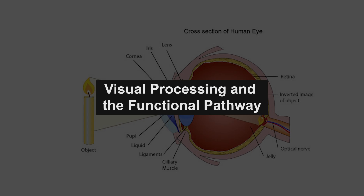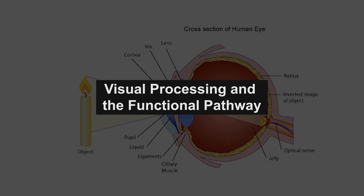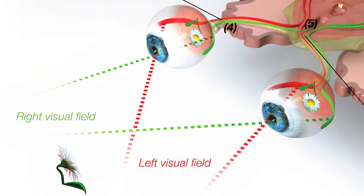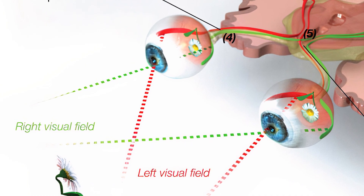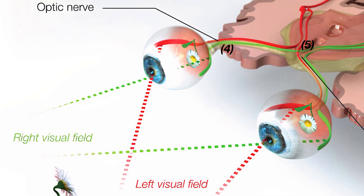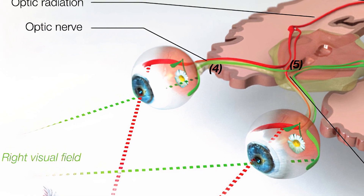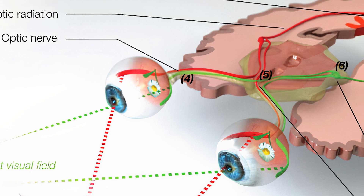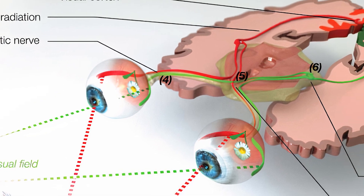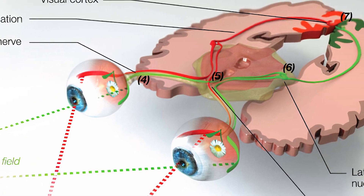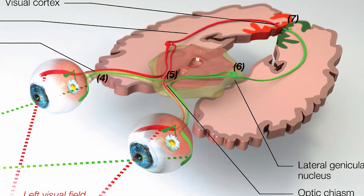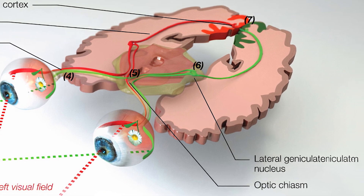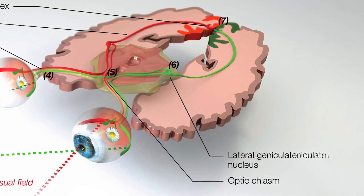Once light is focused onto the retina, the photoreceptors initiate a biochemical process that converts the light signal into electrical impulses. These impulses travel through a network of retinal neurons, including bipolar and ganglion cells, before being transmitted along the optic nerve to the brain.